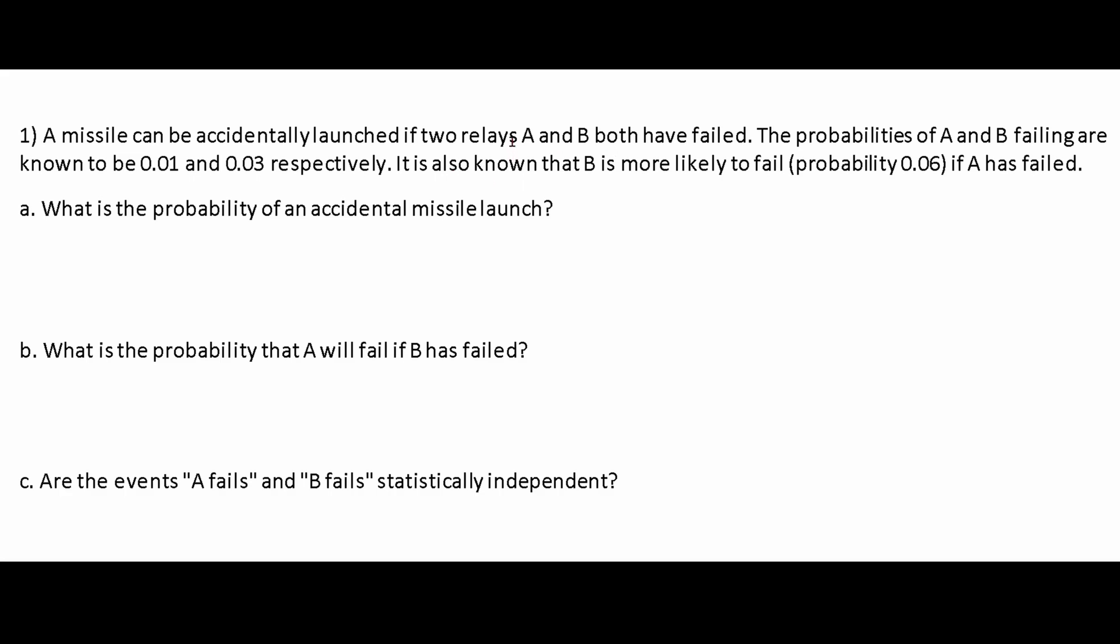A missile can be accidentally launched if two relays, A and B, both fail. The probabilities of A and B failing are 0.01 and 0.03 respectively. It's also known that B is more likely to fail by a probability of 0.06 if A has failed.